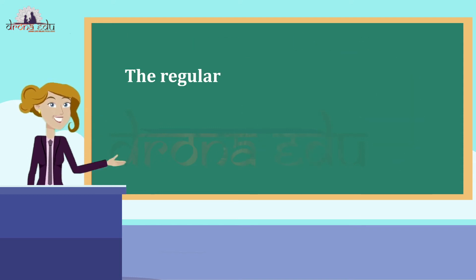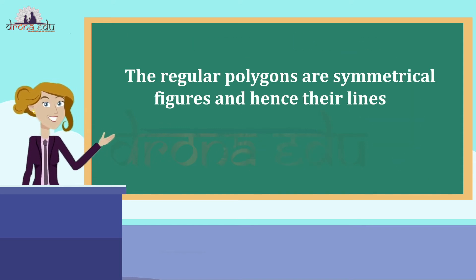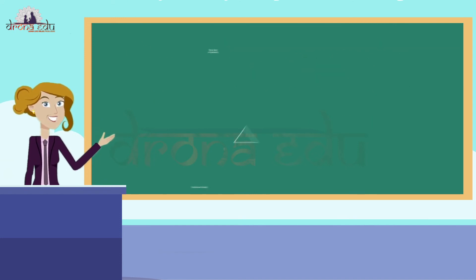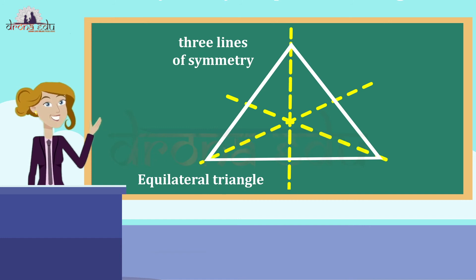The regular polygons are symmetrical figures and hence their lines of symmetry are quite interesting. Each regular polygon has as many lines of symmetry as it has sides. We say they have multiple lines of symmetry.